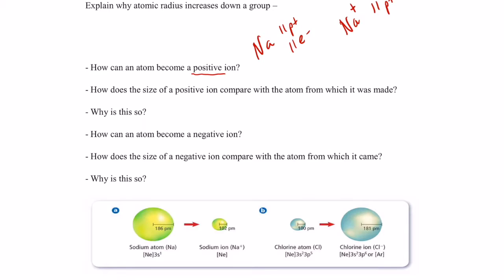How many electrons would Na⁺ have? If it has 10 electrons, it has one more positive than negative, so it becomes a positive ion. How did the atom become a positive ion? It lost electrons. They technically go somewhere, but for our discussion we say they're lost.